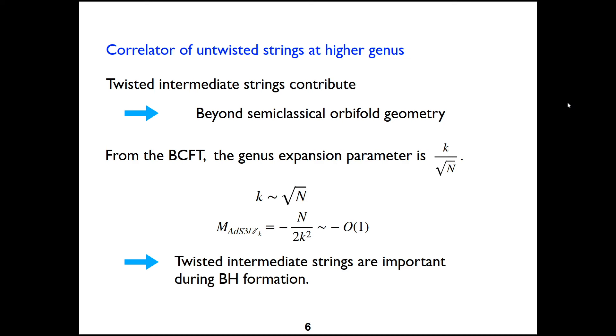At higher genus, the twisted intermediate strings contribute and this introduces effects that go beyond the semiclassical orbifold geometry. From the boundary CFT, we can find the genus expansion parameter is K over square root of N. And these corrections will be important when K's at order of square root of N. And in this case, the mass of the AdS orbifold is minus order one. And in the correlator, the external strings will add order one energy to the system. So this system can reach the black hole threshold very easily. And the black hole can form easily. That means the twisted intermediate strings are important during the black hole formation.